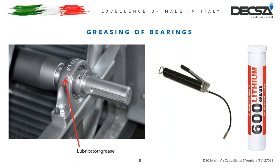Now we can proceed to greasing the bearings — remember, every four months or 3,000 hours of operation. Above each support there is a lubricator to which the pump nozzle must be connected. Here is the lubricator, here is the nozzle, and this is the pump to do this job. This pump must contain a lithium grease cartridge for bearings. The quantity of grease to be used corresponds to three pump strokes — just to understand the quantity, think of a soup spoon. After this operation, you must rotate the transmission manually for even distribution.